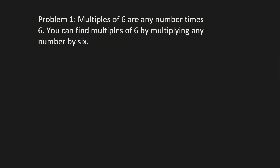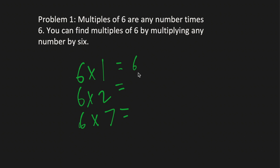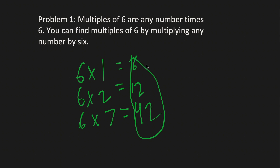Problem 1. Multiples of 6 are any number times 6. You can find multiples of 6 by multiplying any number by 6. So if you multiply 6 by 1, 2, or 7, you get 6, 12, and 42 — these are all multiples of 6. The only exception is 0, because any number times 0 is 0. That's the one and only exception.